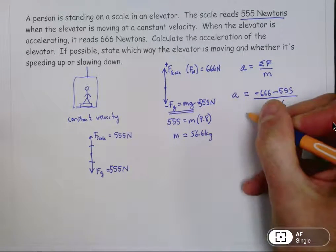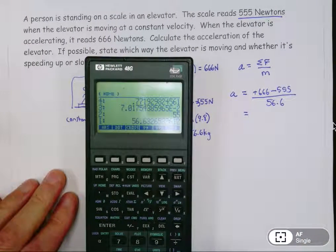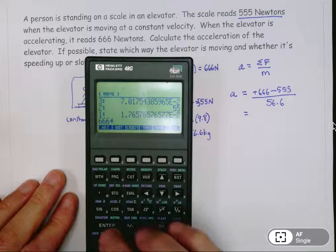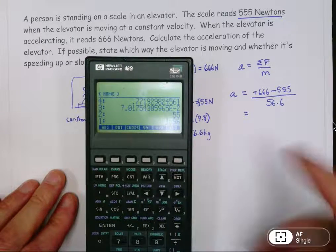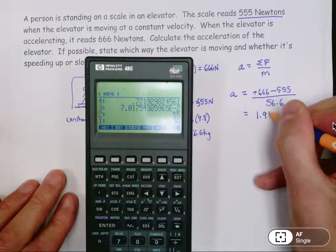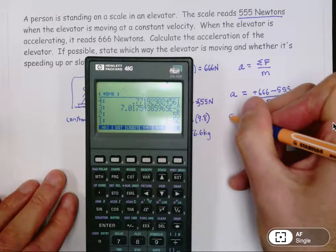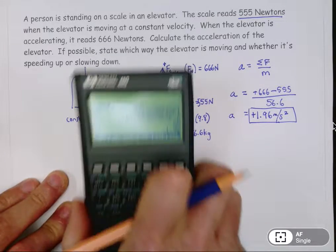That's the other number I needed here. I can use my calculator again to answer this question. So 666 minus 555. And I get a final answer of 1.96 meters per second squared. And it's a positive answer, by the way. So that's the answer to the question, what is the acceleration of the elevator?